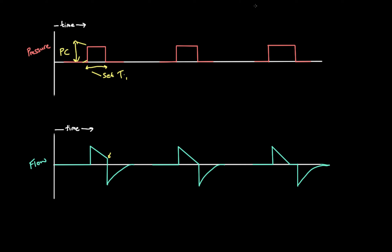In pressure control, we set a pressure and as a result we get a tidal volume. Tidal volume, VT, varies in pressure control. We talked about compliance — how stiff the lungs are. If they're very stiff, a given change in pressure results in a smaller volume. If the lungs are easy to open, the same pressure change results in a bigger volume. The parameters we set in pressure control — the pressure and the inspiratory time — are going to determine the tidal volume, and we need to be able to manipulate that.